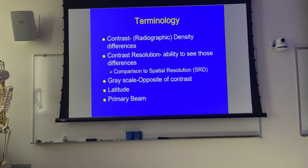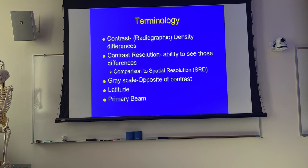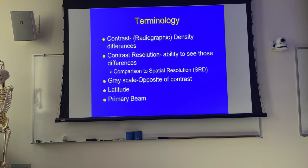Just the terminology again: contrast just means difference in density. Density is how dark a structure or the overall image is, and contrast is the difference between those dark areas. Lung versus bone in the ribs is contrast — you see the difference in those tissue types because of the difference in density. Contrast resolution is the ability to see those differences, and what has historically controlled contrast resolution is scatter, scatter cleanup, and KVP. Now, primarily what we're looking at is the lookup table, though scatter still plays a part.